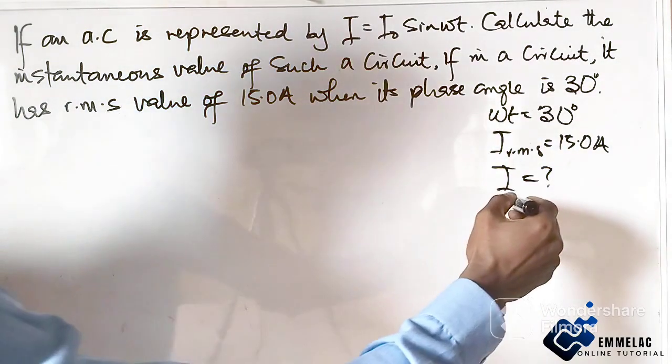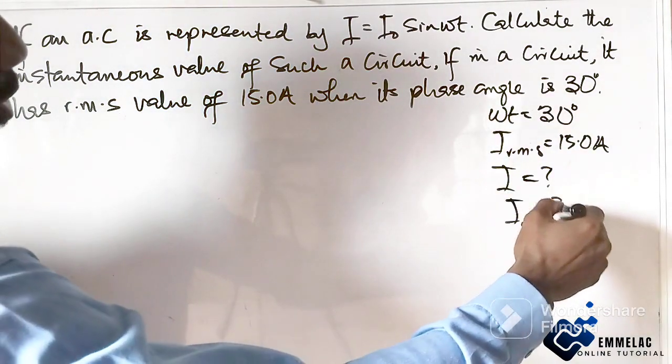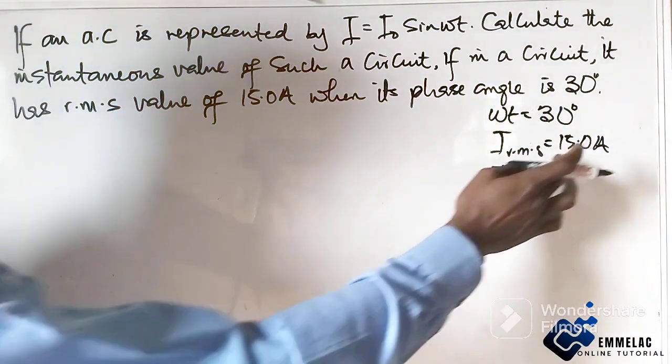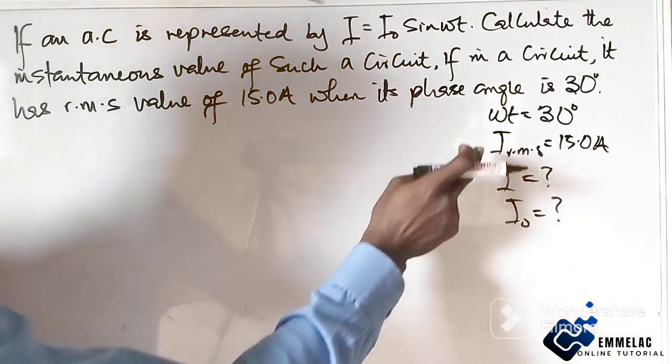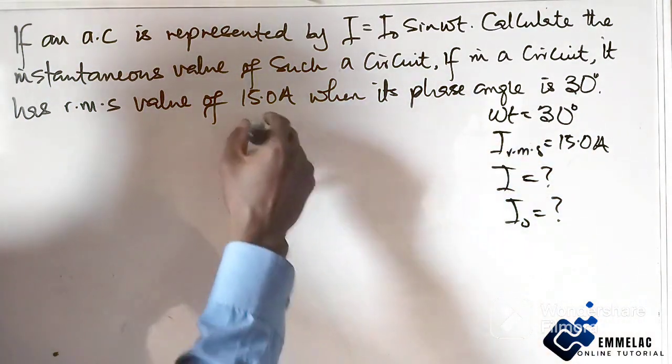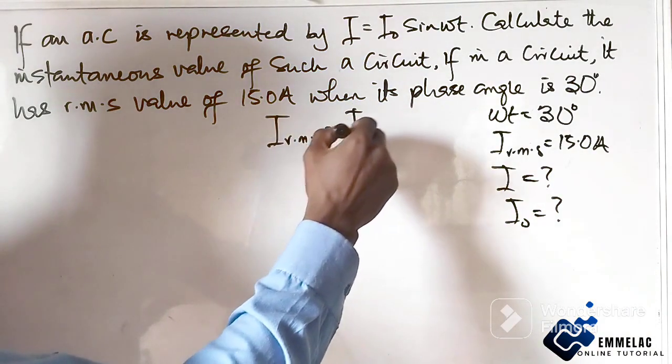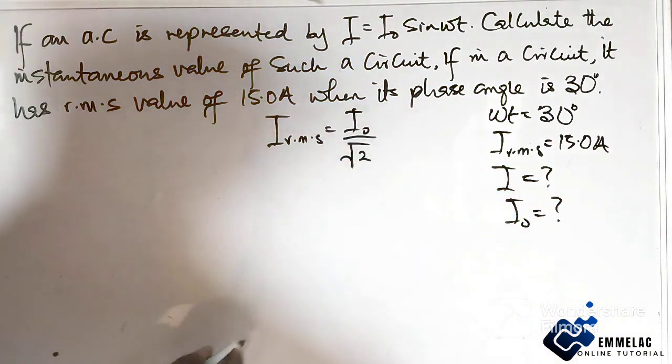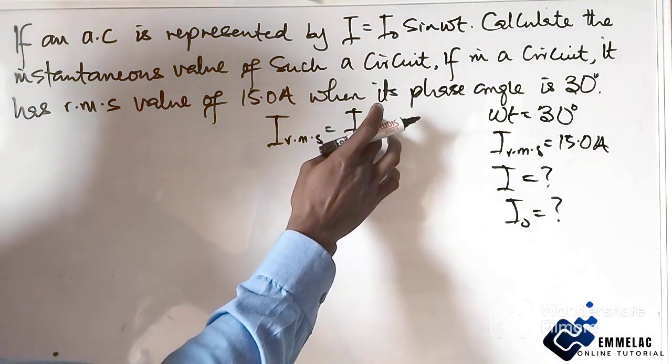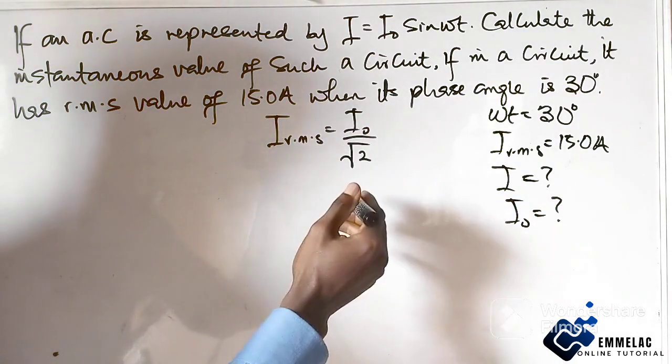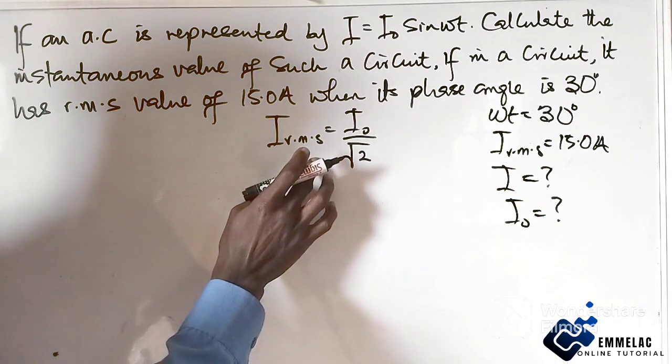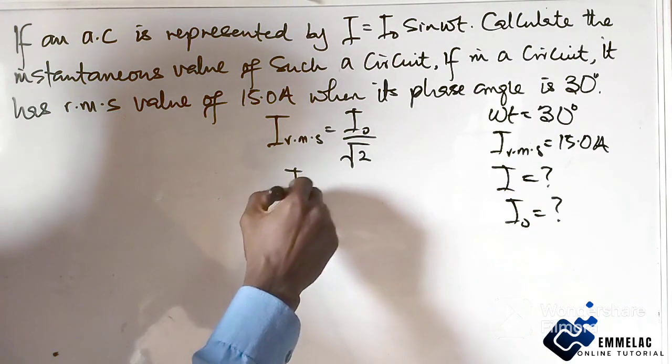Now, we don't know the peak value also. So from here, but we know this, the equation that relates this and this together is given as this. So from here now, we can make the peak value of the current the subject of the relation.